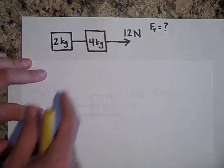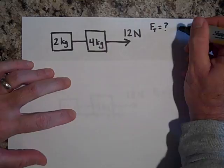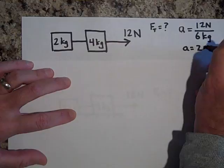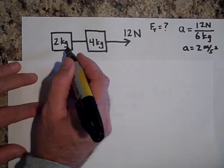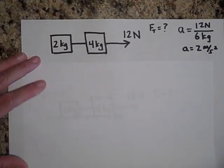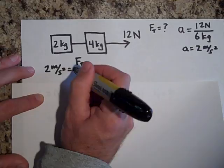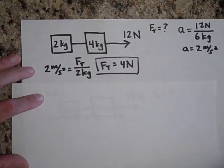We're back. You first have to find the acceleration. We have a net force of 12 newtons trying to accelerate 6 kilograms, so the acceleration is 2 meters per second squared. Now we look at just the 2-kilogram block. The only force acting on it is the tension force, so: a = Ft / 2 kg, giving us Ft = 4 newtons.